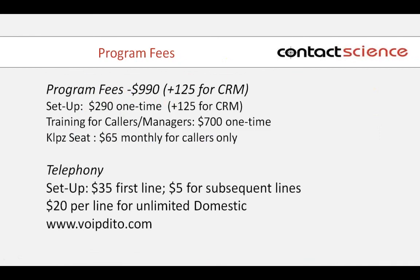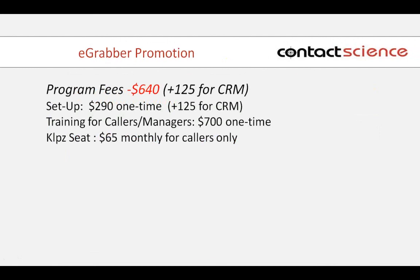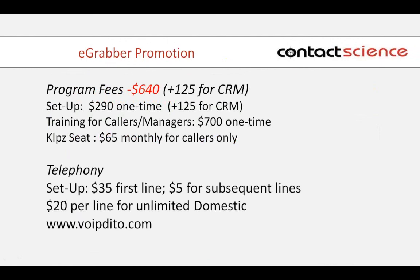Here's our usual fee for this: we charge $990.00. If you have a CRM that we integrate with, we charge $125.00 for the CRM integration piece, $290.00 setup, and training for callers and managers is a one-time fee of $700.00. From the time they start making calls, it's $65.00 per month per caller. The telephone options are listed below. I don't know what the average of one sale is to you, but if you can improve your process by one or two sales, you will cover the cost of this program. The eGrabber promotion has reduced that down to $640.00 — for this webinar, we've cut the training fee in half.